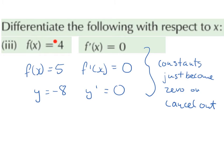In this question, we are given f of x is equal to 4, and the derivative of that is going to be 0. The reason for that is we are asked to differentiate with respect to x. 4 doesn't have an x, so we can't differentiate it — it's not possible, so we just end up getting 0. So if the function is 5, then the derivative is going to be 0. If the function is 8, then the derivative is going to be 0, and so on. Constants, which are numbers with no variables attached, just become 0 or cancel out.